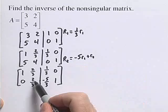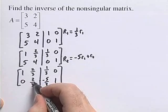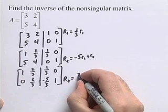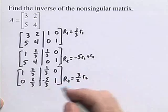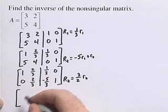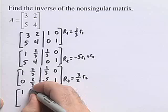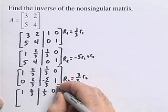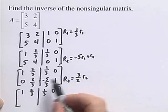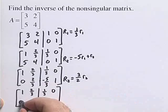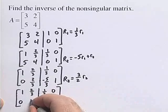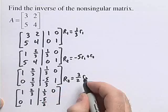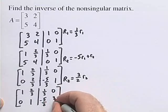We'd like to get a 1 in our second row, second column. So our new row 2 is equal to 3/2 times the current row 2. We're not changing our first row, so we rewrite that: 1, 2/3, 1/3, 0. Now we perform this operation: 3/2 times 0 is still 0. 3/2 times 2/3 is 1. 3/2 times negative 5/3 is negative 5/2. And 3/2 times 1 is 3/2.